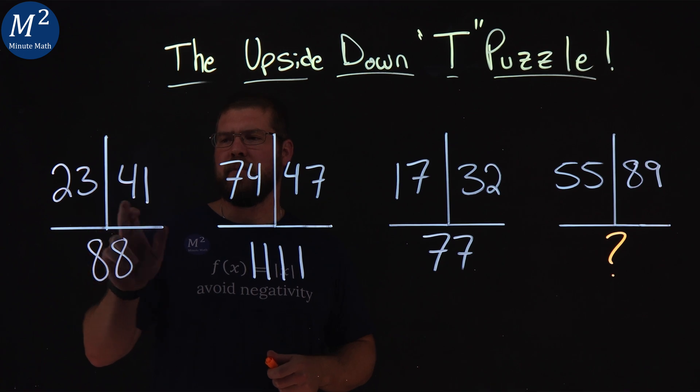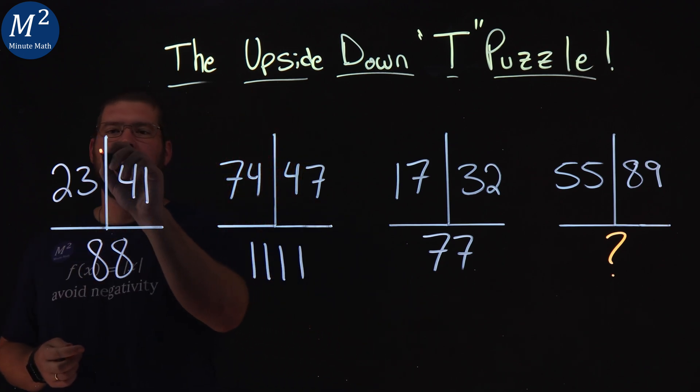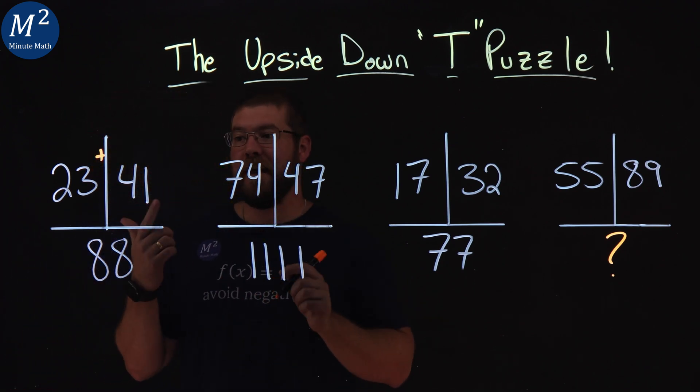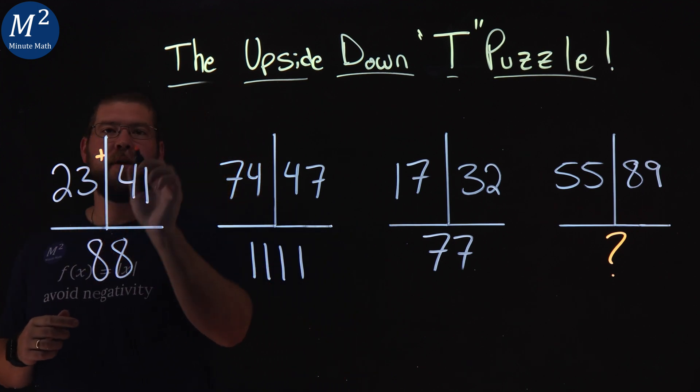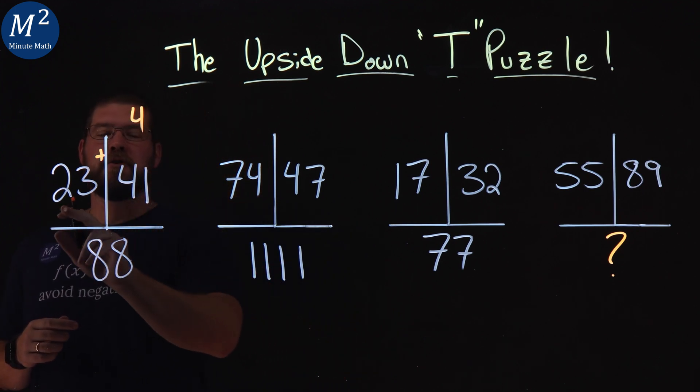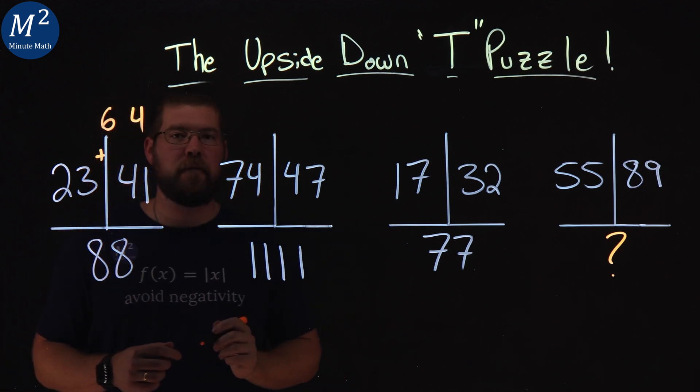What happens if we add these two numbers. Let's add them up. 23 and 41. 1 and 3 make a 4, 4 and 2 make a 6. We got a 64 here.